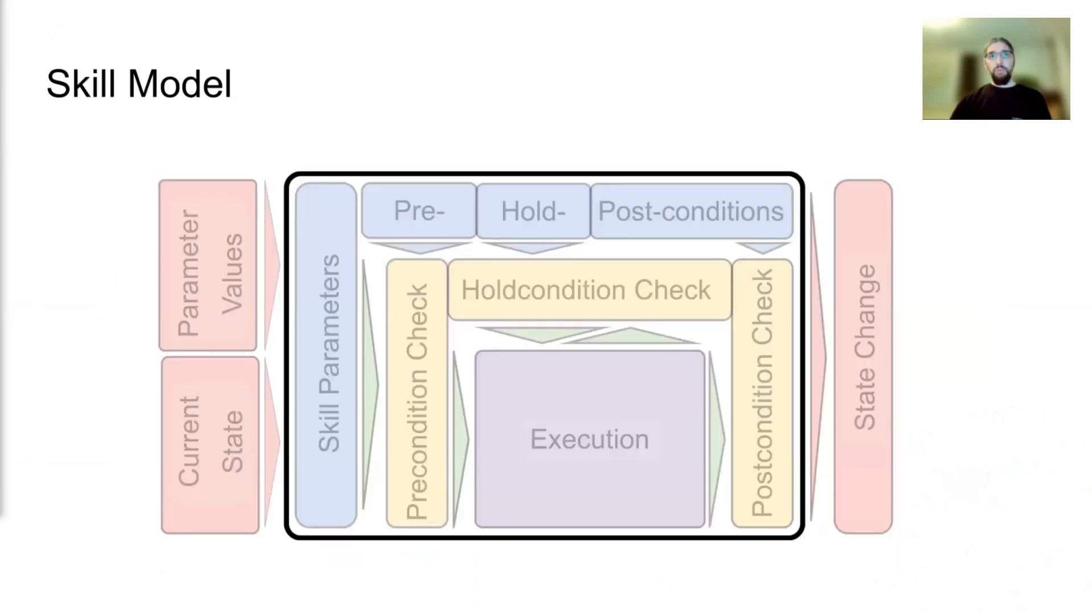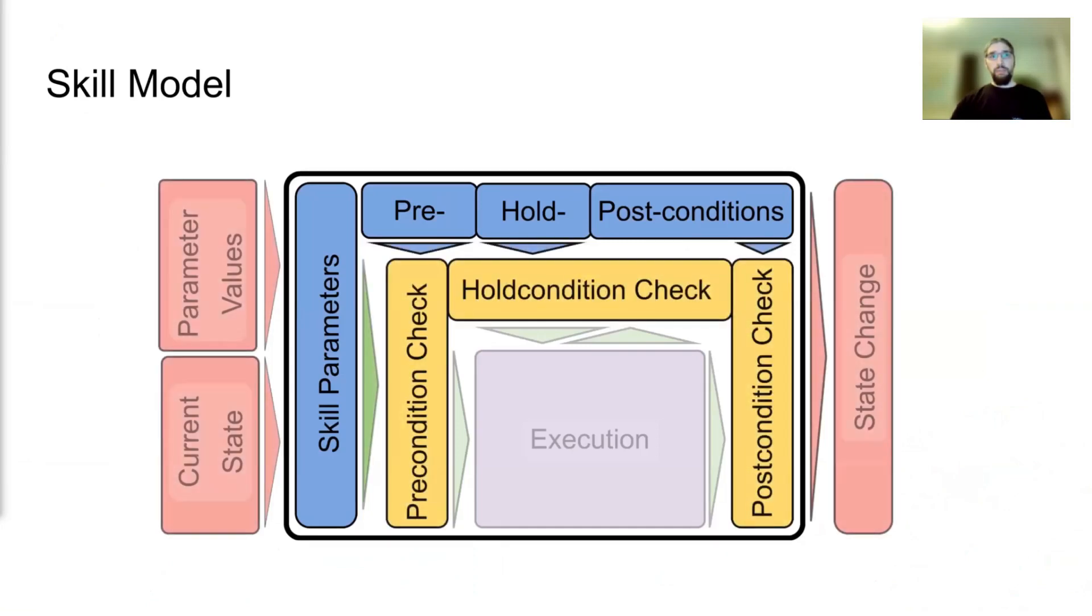In the Skyros 2 skill model, a skill description formulates the skill parameters and pre-, hold-, and post-conditions. They are used for checks around the execution of a skill.